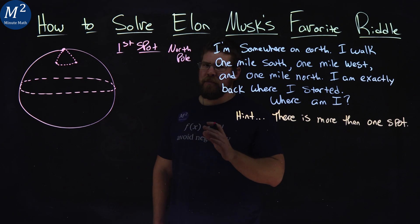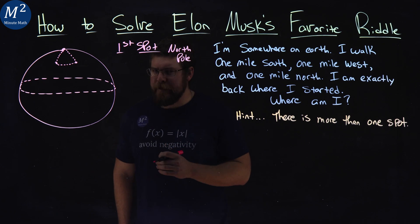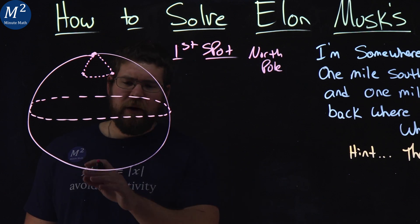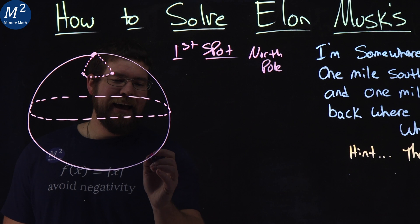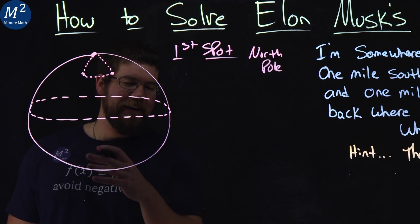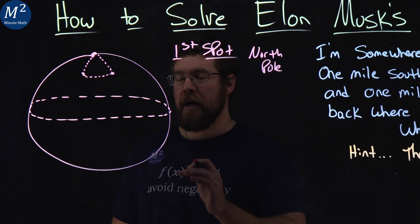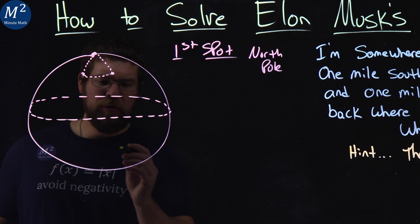The second part is multiple answers actually, and this one's a little tricky. Let's look at the South Pole. Now granted, the way I drew this was kind of difficult, but let's imagine we had a circle, a circumference, that was exactly one mile long. So I'm going to do this in a different color so you can see it here.